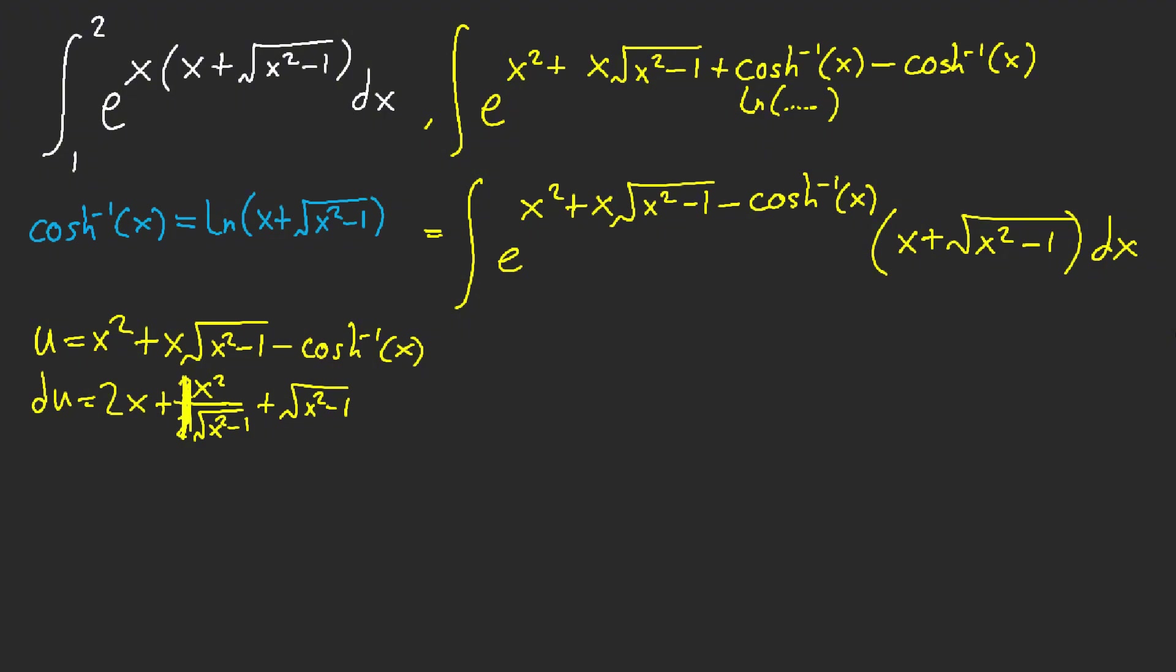And then here this is just minus 1 over square root of this. So these two, they cancel... well, they don't cancel out, but they simplify. This and this is equal to this.